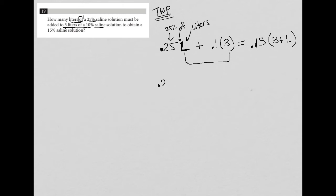To simplify this, I have 0.25L plus—let's call it—0.3 is equal to, let's distribute the 0.15 across. So 0.15 times three is 0.45, and 0.15 times L is plus 0.15L.